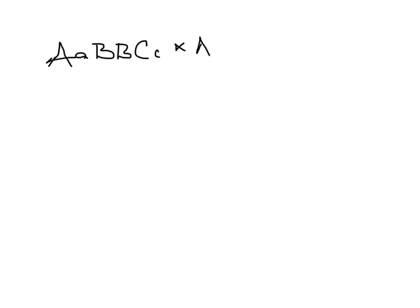I cross that to a second organism that is also heterozygous for A (big A little a), homozygous for B (little b little b), and heterozygous for C (big C little c). What happens when I cross these?